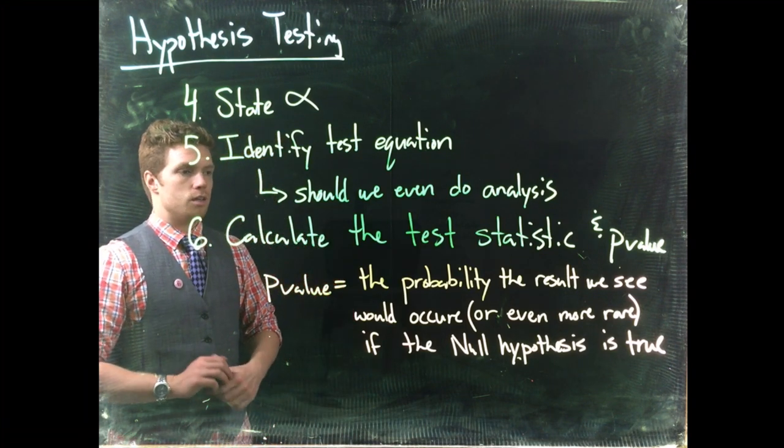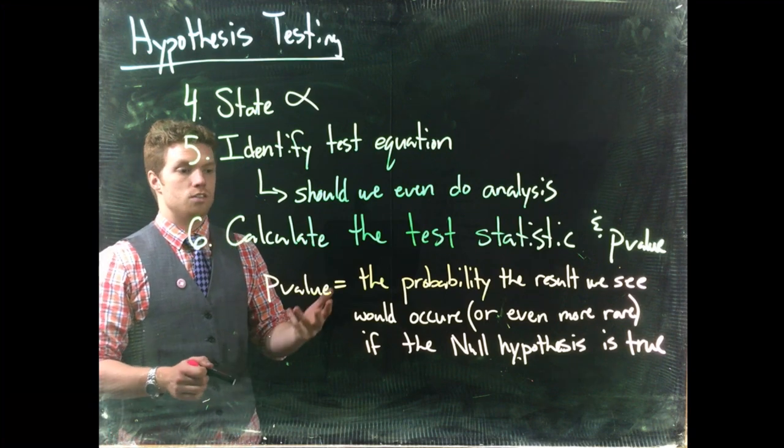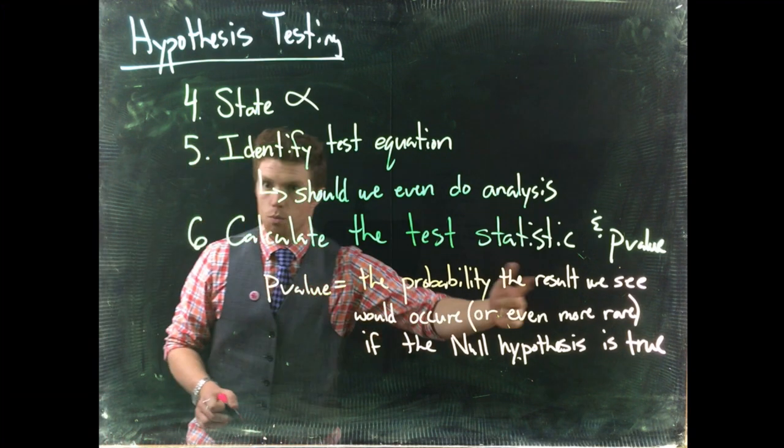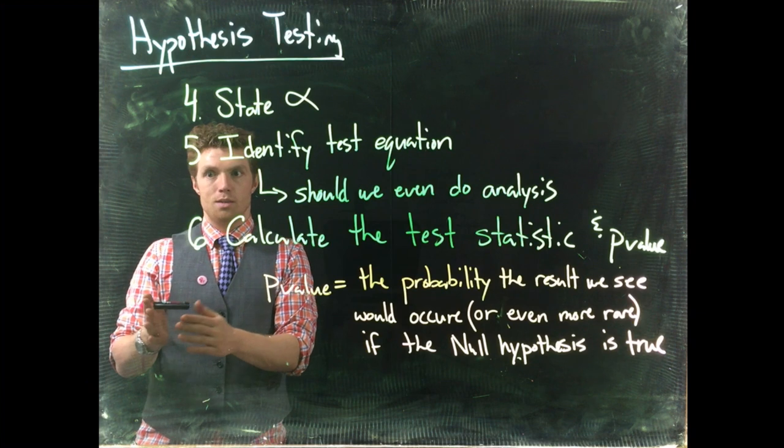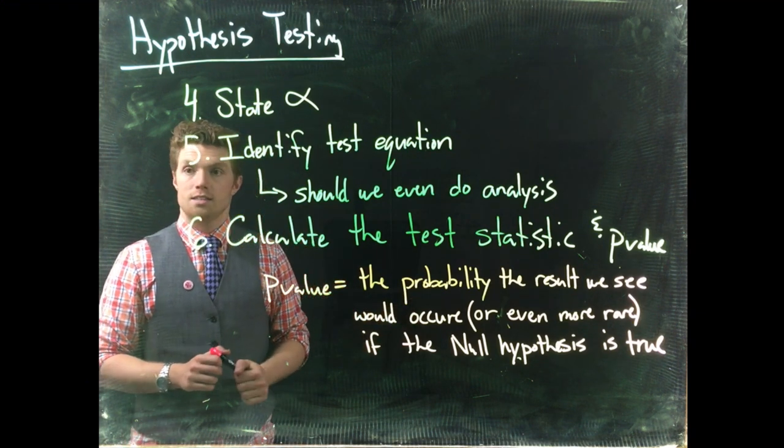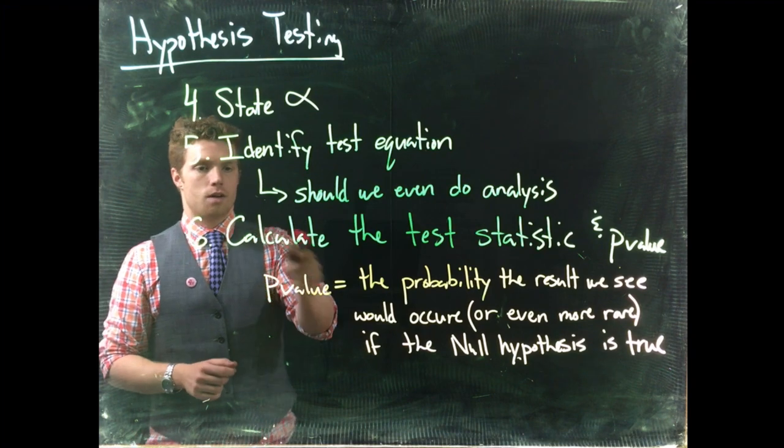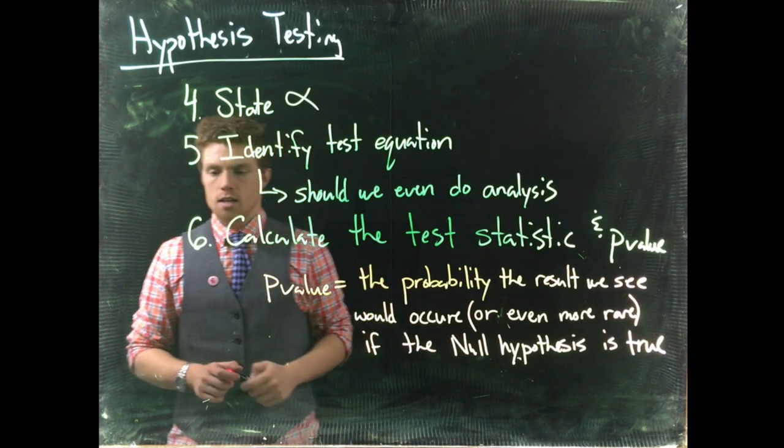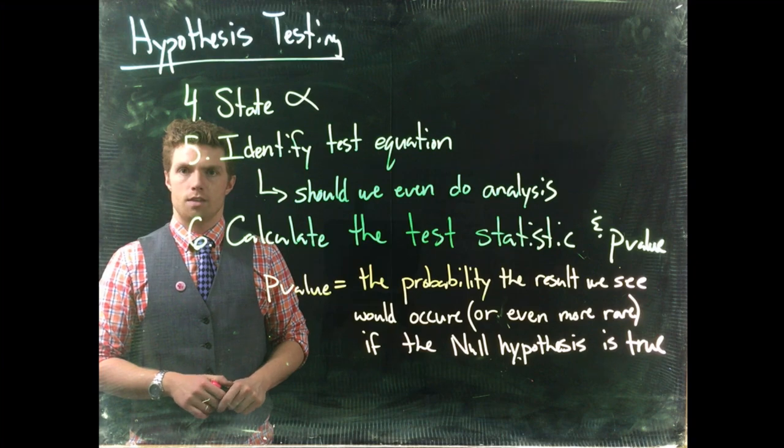Our p-value is the probability that the result we see would occur, or something even rarer, if the null hypothesis is in fact true. We'll cover how to do this within our software videos.